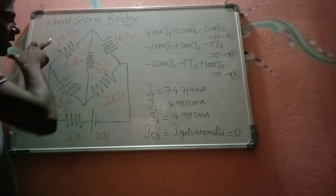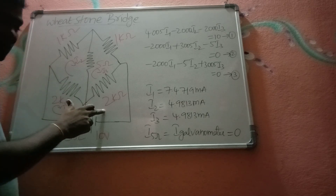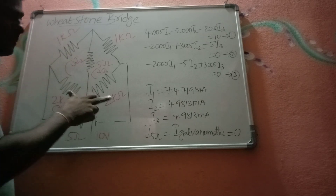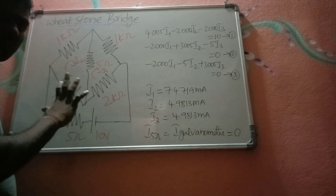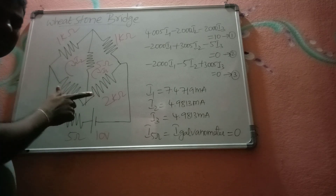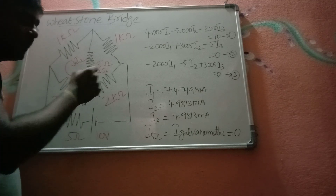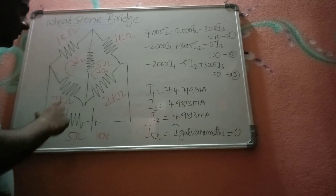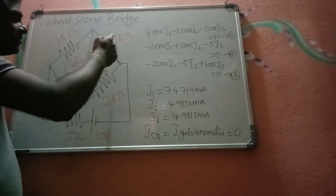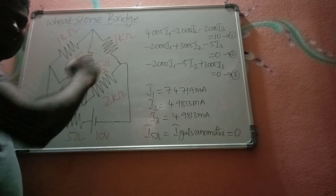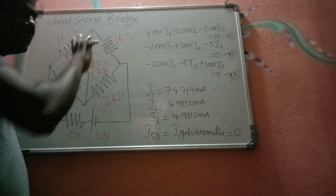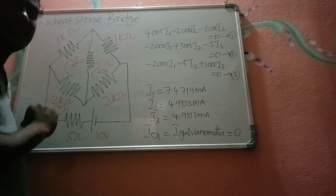If you observe, this arm is 1 kilohm and this is 2 kilohm. 1 into 2 gives 2 megohms — that is the product of these two resistances. Similarly, finding the product of the other two opposite arms also gives 2 megohms. Hence we can say the bridge is in balanced condition.